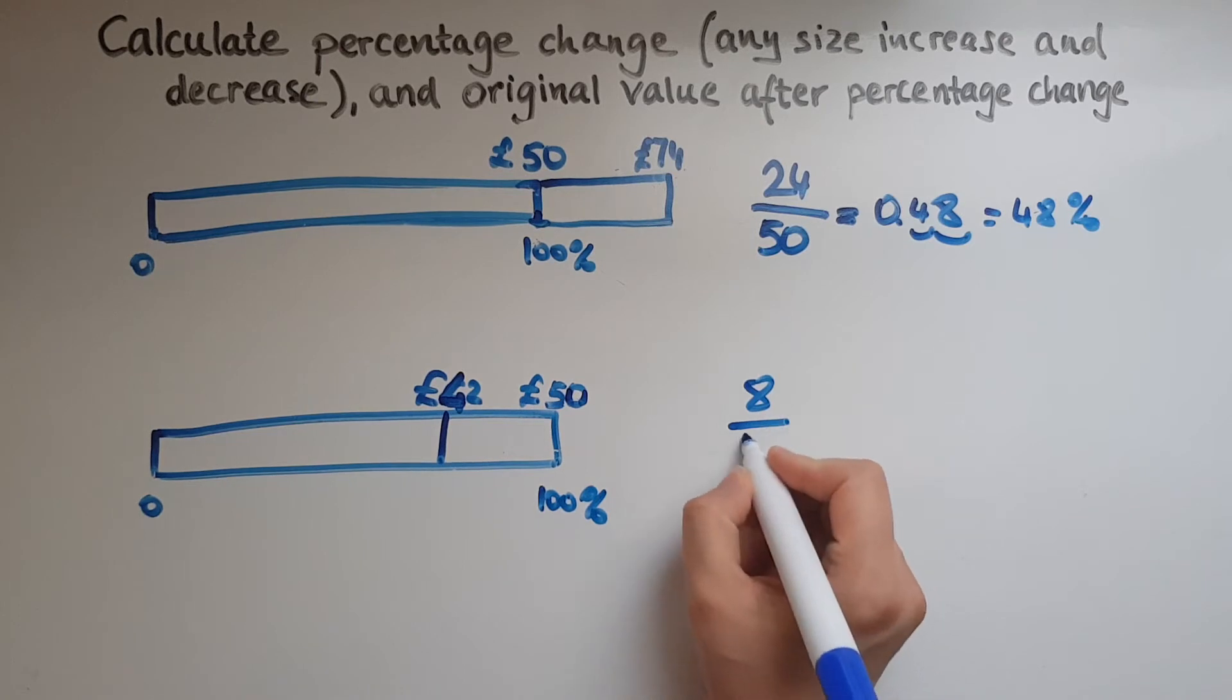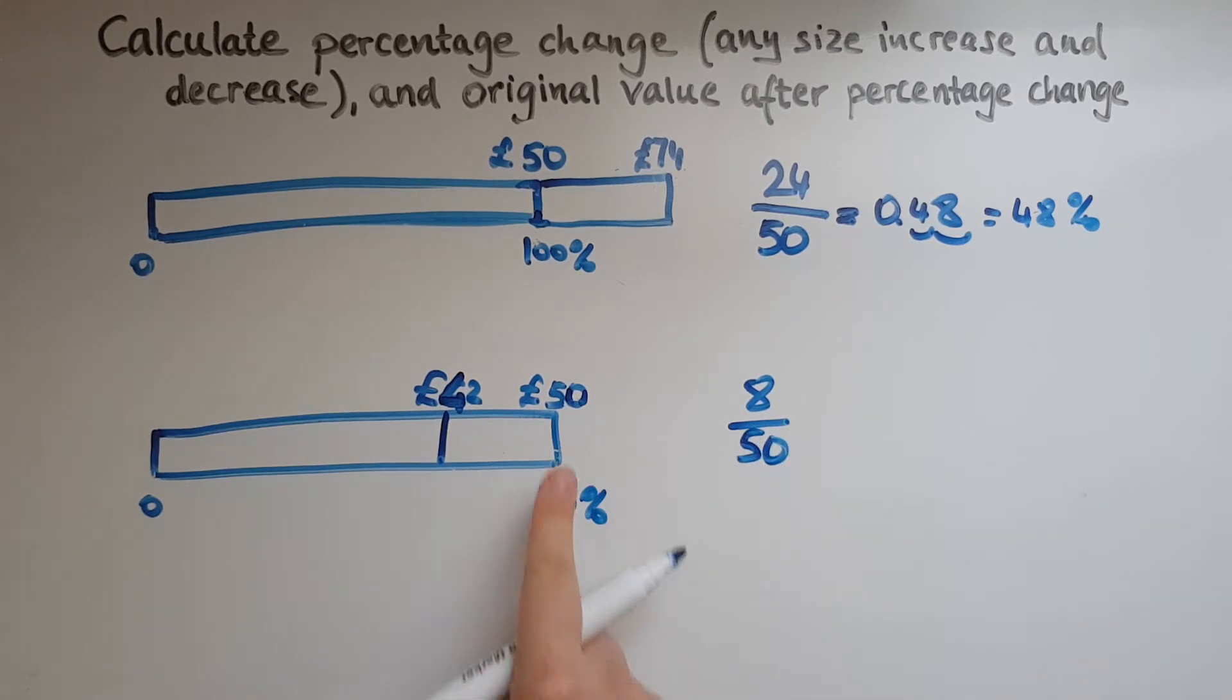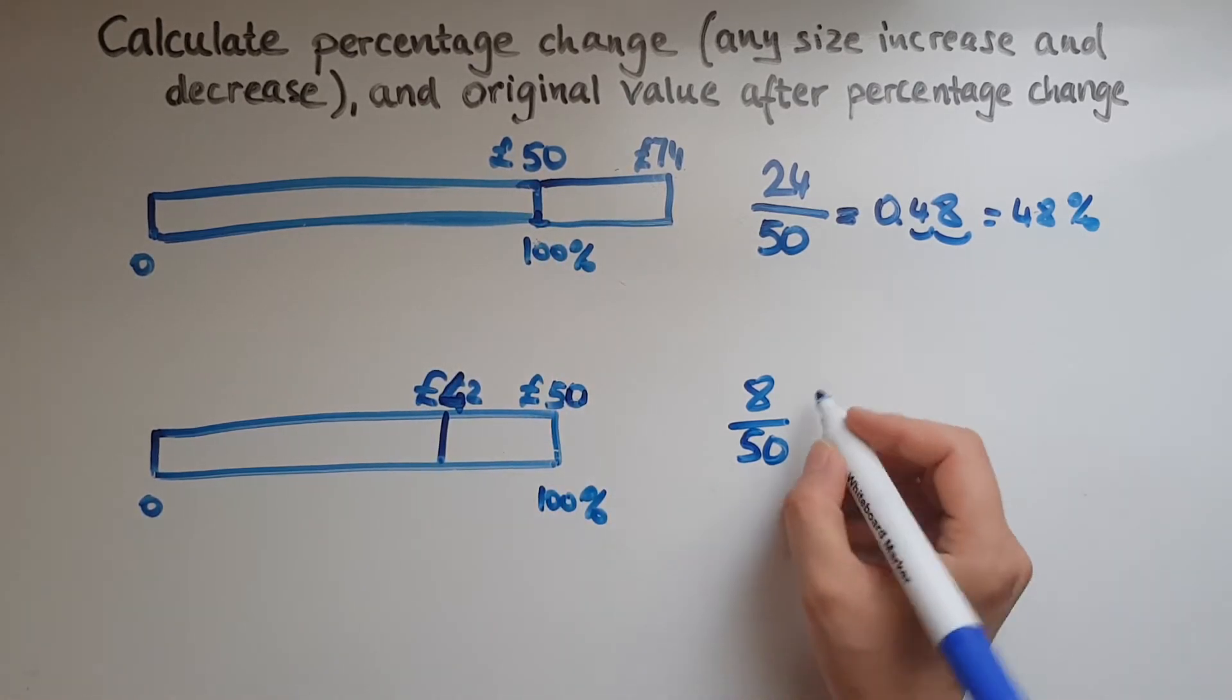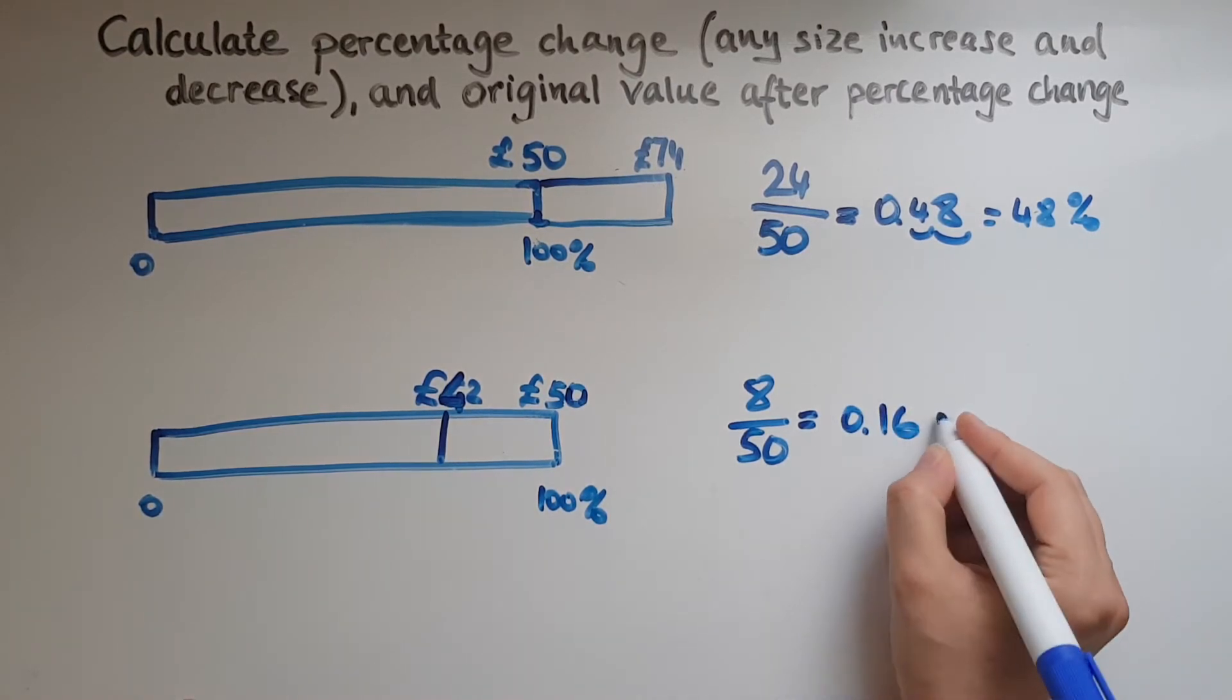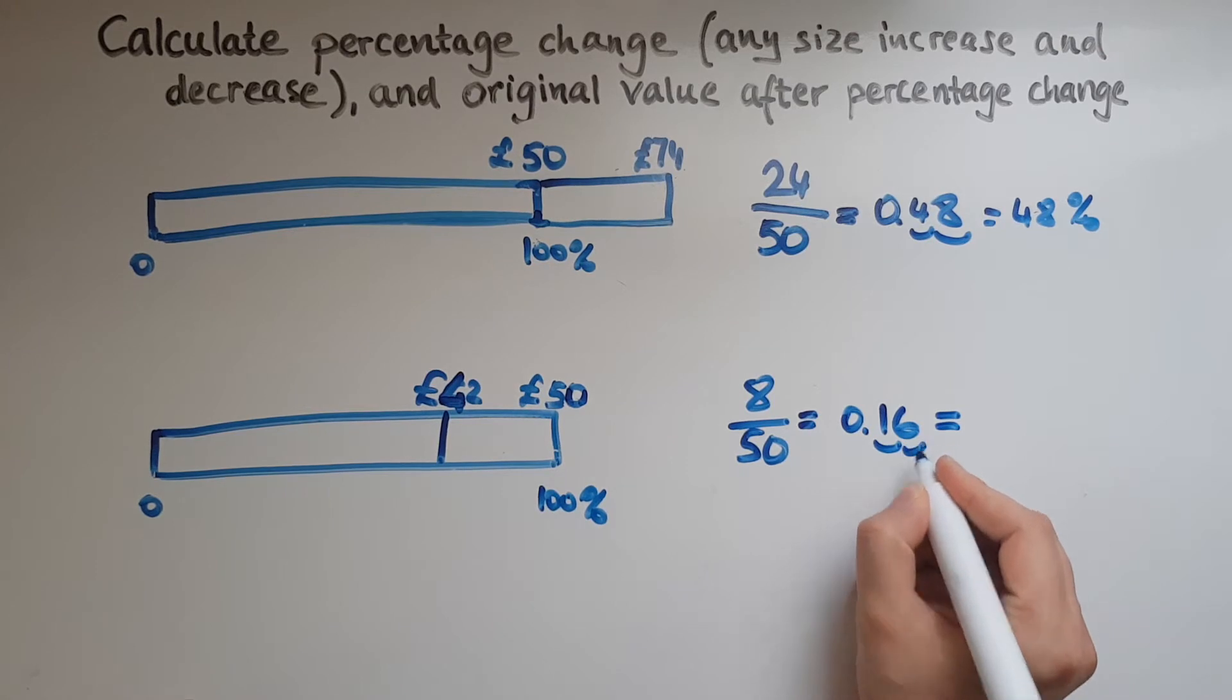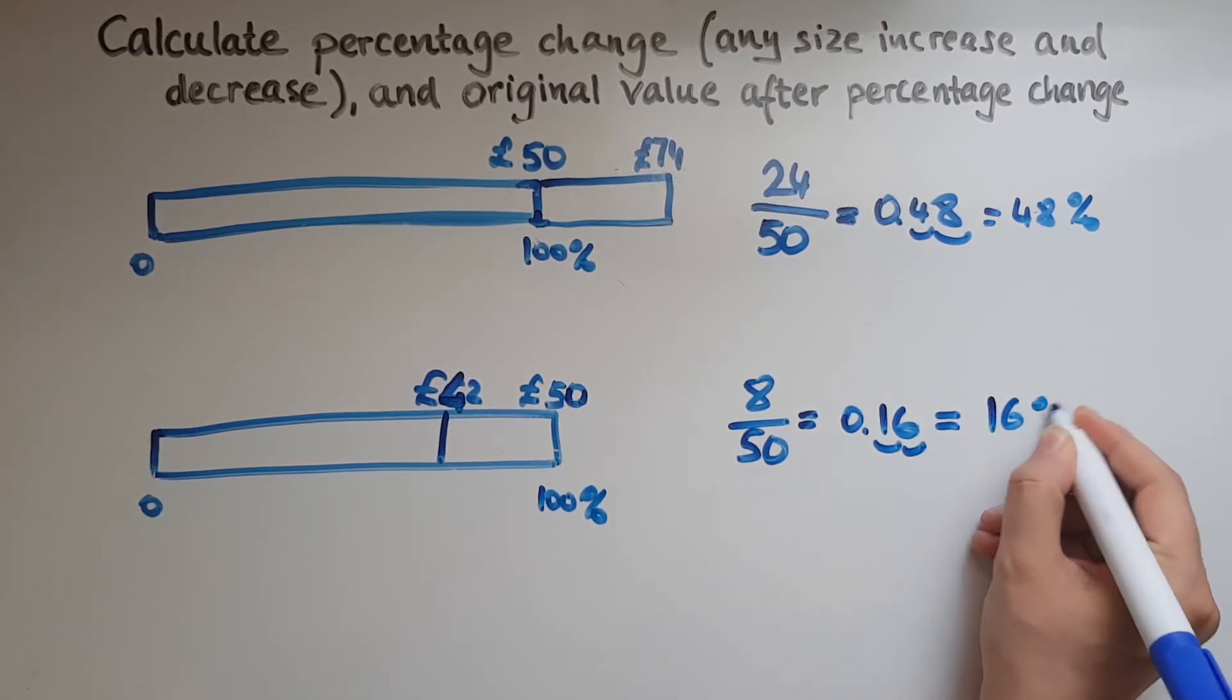So 8 out of 50. Always looking at the one that matches the 100% or the original value. So 8 out of 50 or 8 divided by 50 gives 0.16. So that as a percentage is two digits after the decimal point 16, 16.